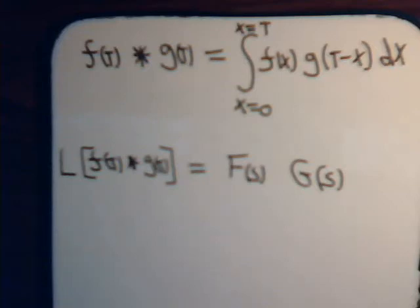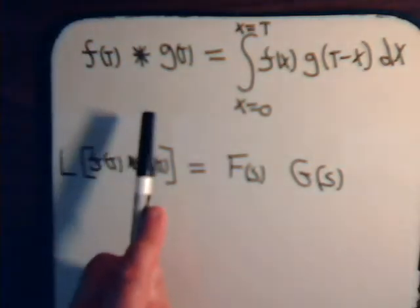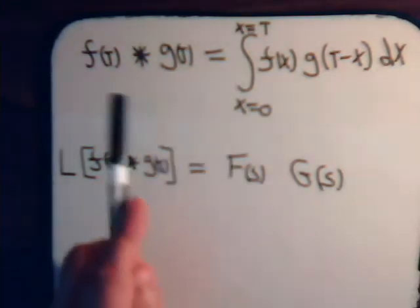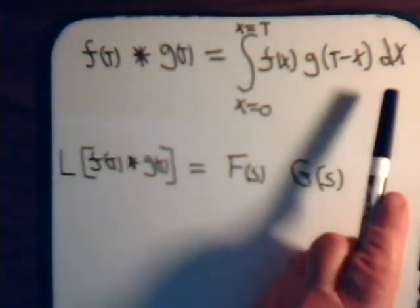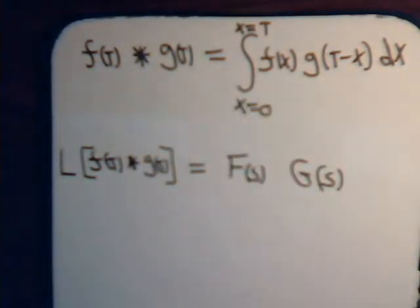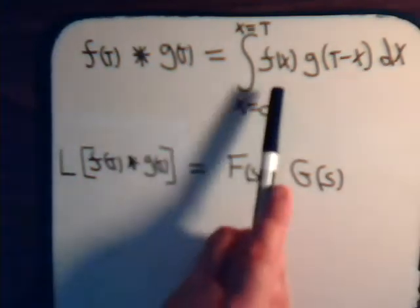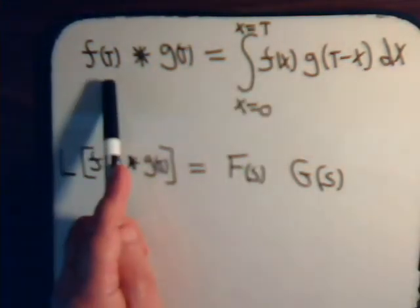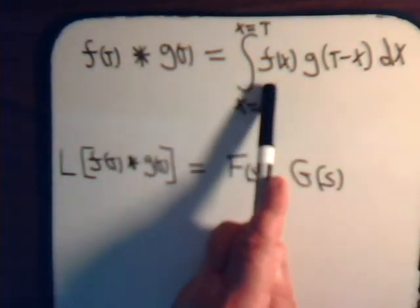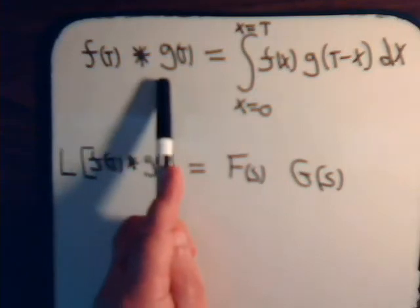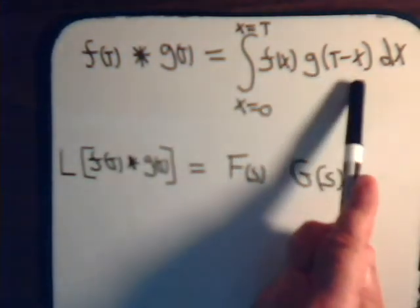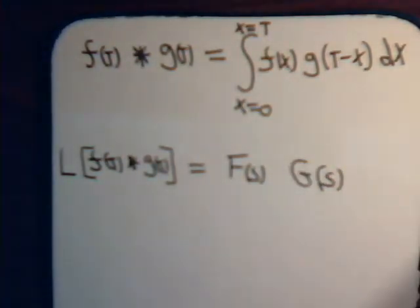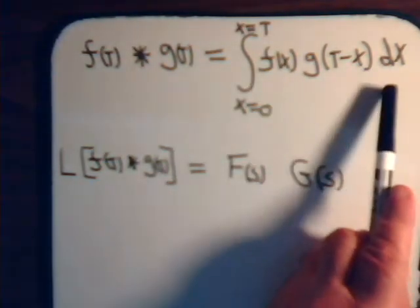In the last video in our series on differential equations, we introduced the concept of convolution. If we have two functions of t, the convolution of the two functions is this integral, where x is the variable of integration. Inside the integral, it's f of x times g of t minus x dx, where t is treated like a constant.